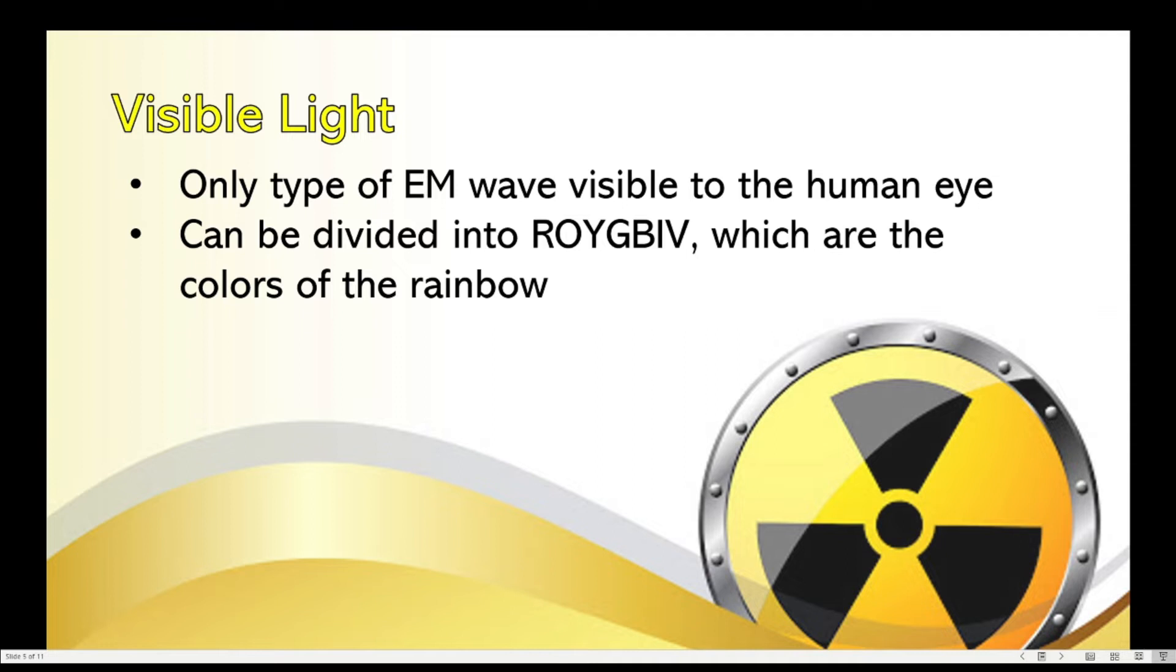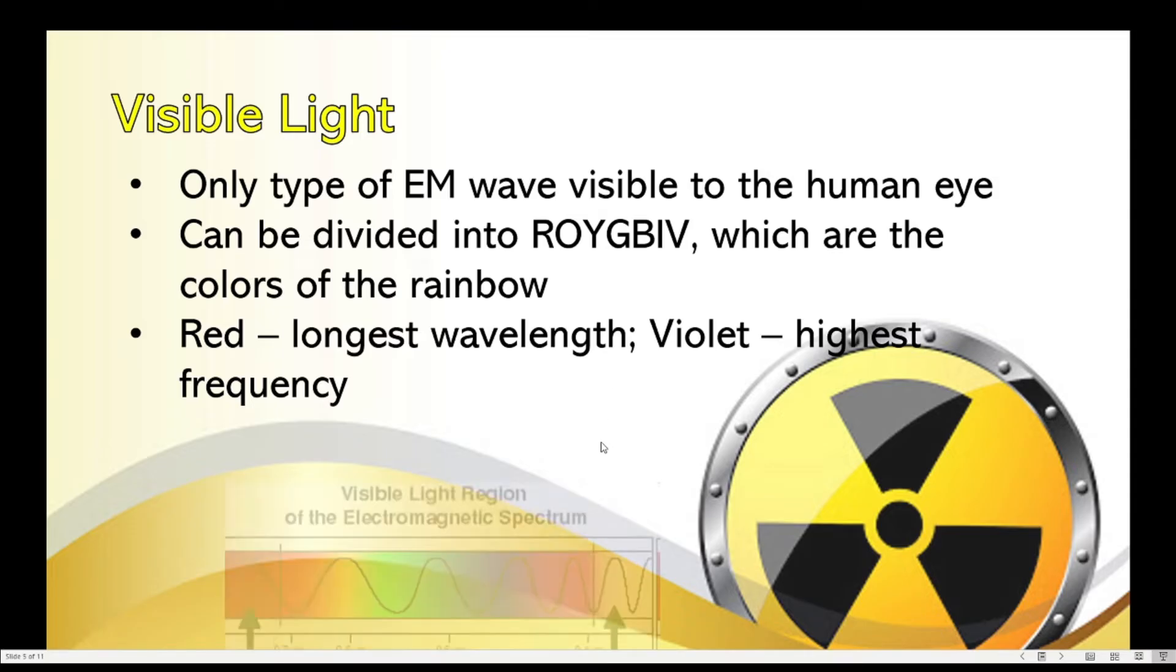Red, orange, yellow, green, blue, indigo, and violet. And we know that these are the colors of the rainbow. Among these seven colors, red has the longest wavelength while violet has the highest frequency.